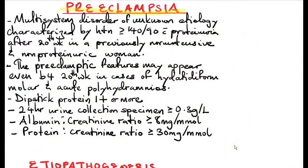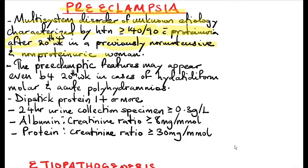Preeclampsia is a multi-system disorder of unknown etiology, characterized by hypertension of systolic more than 140 and diastolic more than 90 with proteinuria, after 20 weeks gestational age in a previously normotensive and non-proteinuric patient. However, some preeclampsia features may even appear before 20 weeks gestational age.